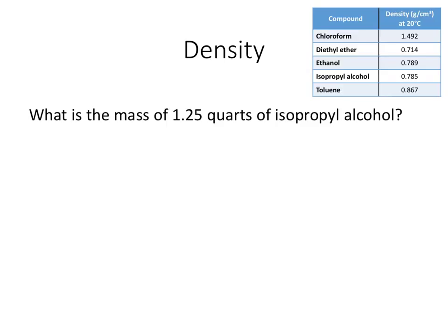So our last density problem, what's the mass of 1.25 quarts of isopropyl alcohol? What is the mass means mass is what I'm looking for. 1.25 quarts, that's a volume, and I have a density. So if my formula density is equal to mass divided by volume, and I'm looking for mass, so mass is equal to density times volume. So let's just go ahead and plug in what we have.